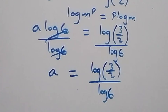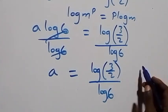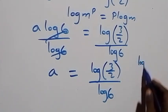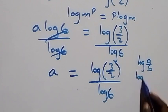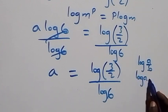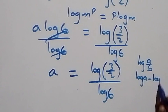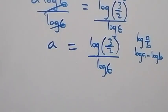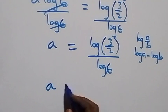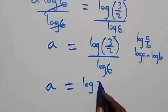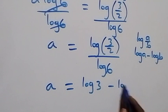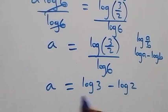This follows when we have log a over b, which can be written as log a minus log b. So what we have becomes a equals log 3 minus log 2, all over log 6.